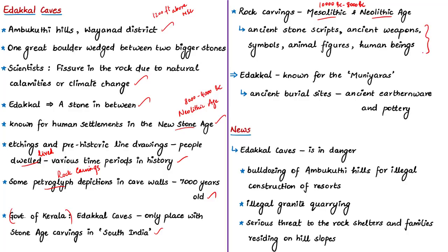The rock surface is filled with motifs — one can see figures, crosses, triangles, trident spears, various animals and human figures. Some recent researchers state that the caves have their origins in the Indus Valley civilization. This place, Edakal, located in Ambukuti Hills, is also famous for the Muniaras — ancient burial sites discovered in these hills. These burial sites have given a rich collection of ancient earthenware and pottery, which have become part of Indian heritage and help in understanding the lifestyle of ancient Indians.